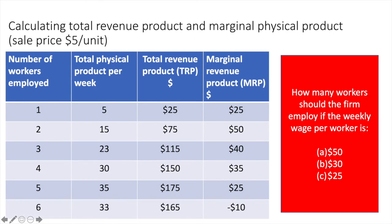Using this information, we're now going to try and determine the amount of workers a firm would hire at different wage rates. Consider how many workers a firm would hire if the weekly wage for workers is $50, $30, and $25. Pause the video here to answer the questions by yourself before continuing. You should have selected the following answers. If you weren't able to correctly answer these questions, explain why below and we can work on the answer together.